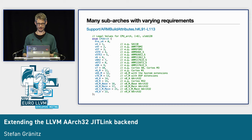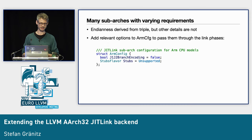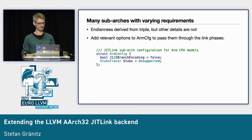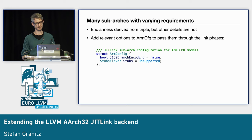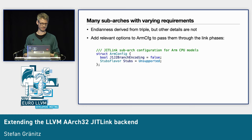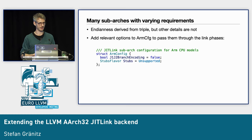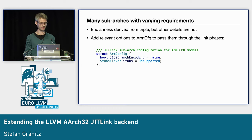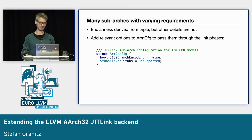The many sub-architectures mean varying requirements and very detailed configurations that are not part of the target triple. All other JIT link backends basically use the target triple to determine all target information, but NDN is there — other information is not. So I introduced an ARM config structure that is passed through JIT link's phases along with the link graph and other information. This is the place to add target-specific and sub-architecture-specific configurations, like the J1/J2 branch encoding or the stubs flavor. This can be extended as needed.